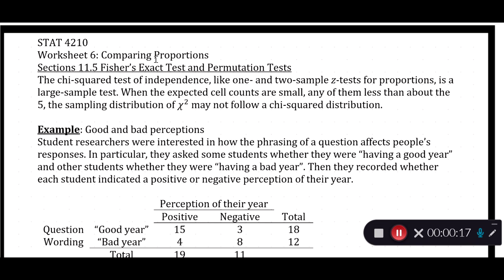When the expected cell counts are small, any of those cell counts means that the sampling distribution of chi-squared observed may not actually follow the chi-squared distribution, and we'll see this with the following example.